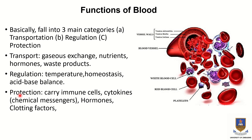Under protection, blood carries immune cells — the white blood cells — as well as cytokines, hormones, and clotting factors. Clotting factors work to impede blood flow where necessary for hemostasis, protecting the body from hemorrhaging.